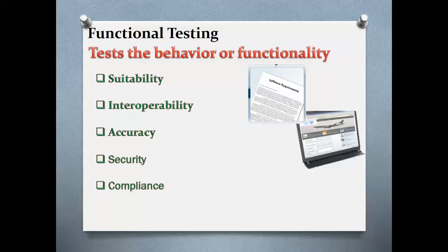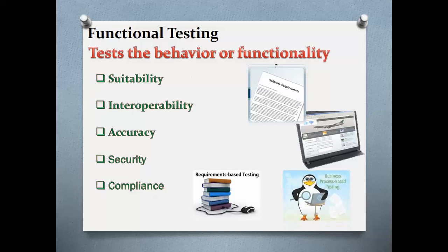To perform functional testing, you design test cases using the requirement specification or functional specification document and use cases. There are two approaches to functional testing: requirement-based testing and business process-based testing. Requirement-based testing is based on the functional requirement specification document of the system, whereas use cases provide the base for business process-based testing.